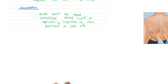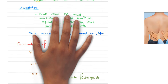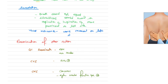Auscultation: ask the patient to take deep breaths. In my patient, breath sounds are bilaterally equal. Adventitious sounds heard on expiration and inspiration, more prominent on the left side. Vocal resonance is more resonant on the left side. Your examiner can ask about abnormal breath sounds, which we already discussed.